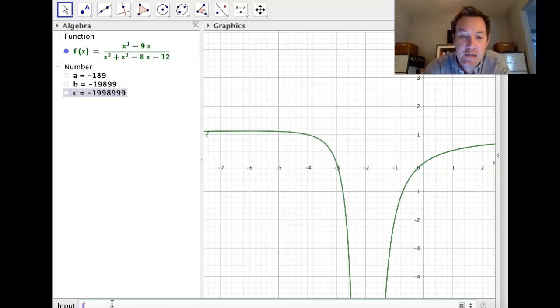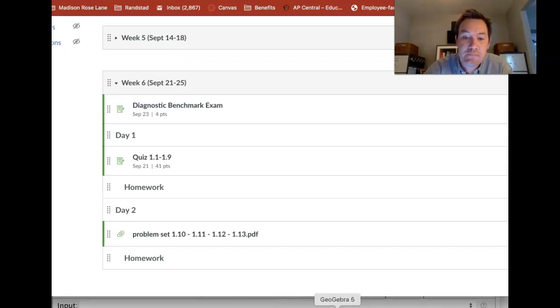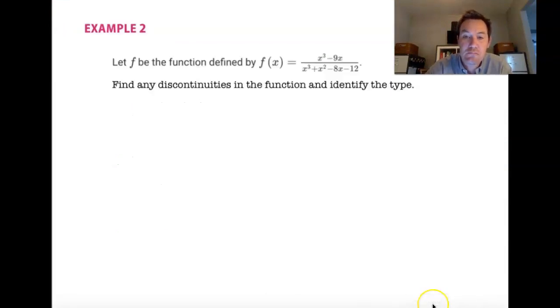And in fact, GeoGebra is smart enough that it can kind of handle calculus. So, if I put in negative 2, it'll just tell me that the output is infinite. So, our answer here is that we have an essential discontinuity, or an infinite, if you wish, discontinuity at X equals negative 2.